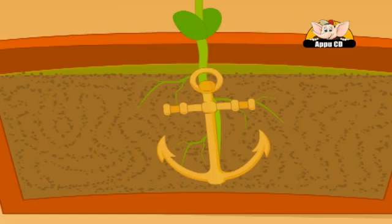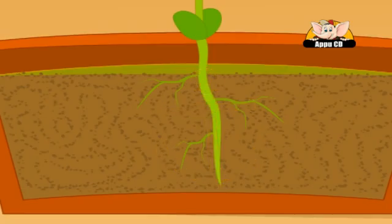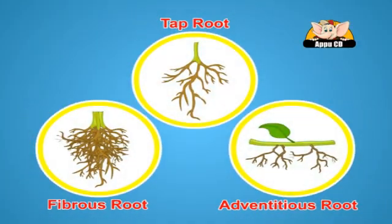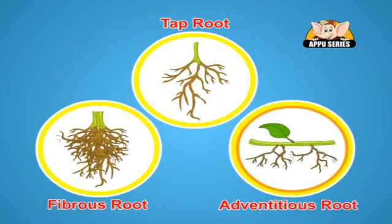Roots help to anchor the plant in the soil so it does not fall over. There are a wide variety of roots present in the world, out of which the following three are the most common ones.